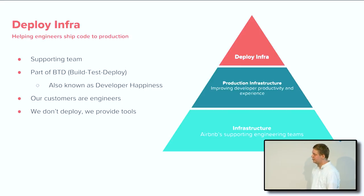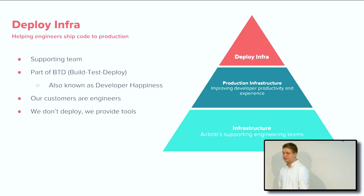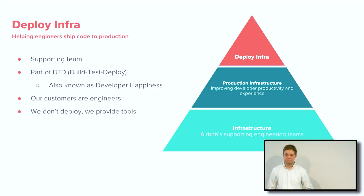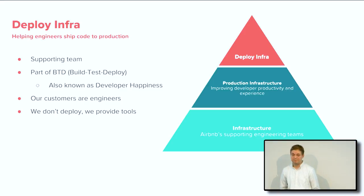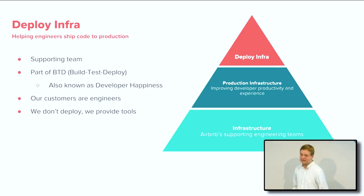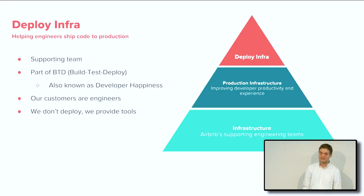In 2017 I joined Airbnb, which is now my home — I've been there about a year. I'm on a team called Deploy Infra, which is completely different from being a front-end engineer. Deploy Infra is a supporting team. At Airbnb we have enabling teams which basically enable product engineers to do what they're best at. We want to make sure product engineers are happy.